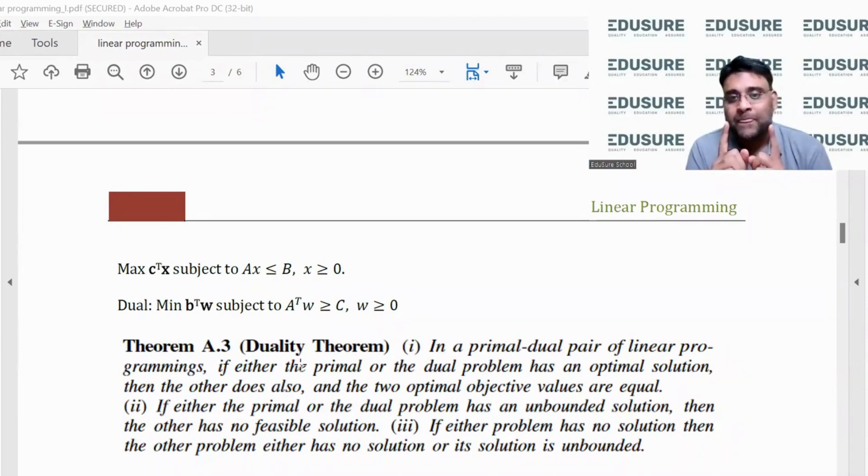Sometimes the primal problem is a three-variable case with two constraints. If I convert it to dual, it becomes a two-variable case with three constraints, which is easily solvable by the graph. That is also an advantage.